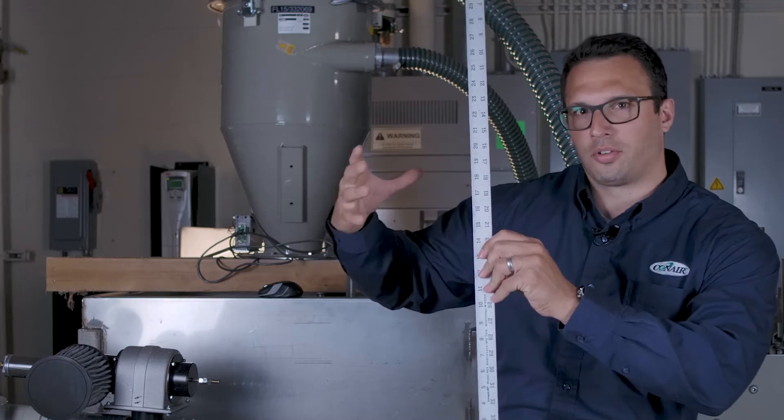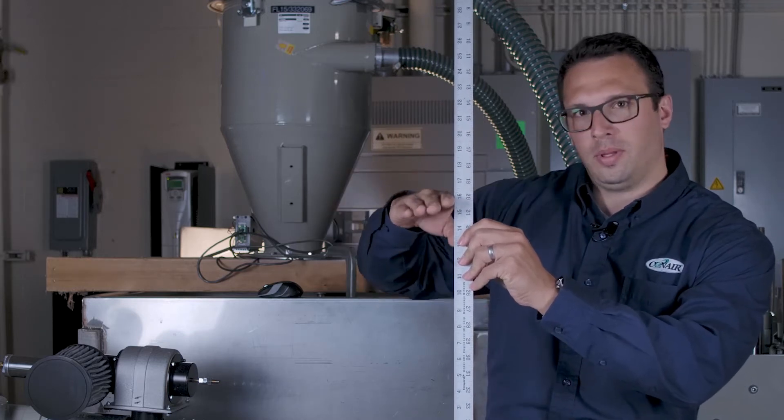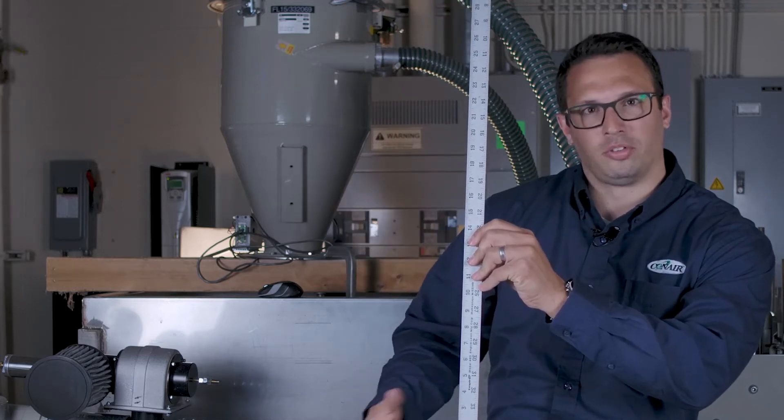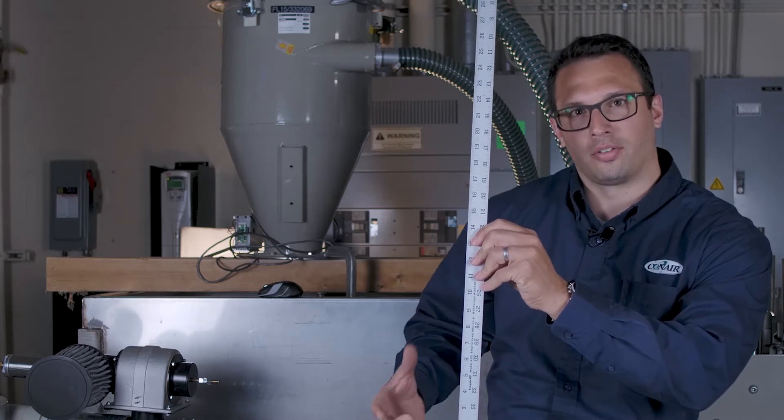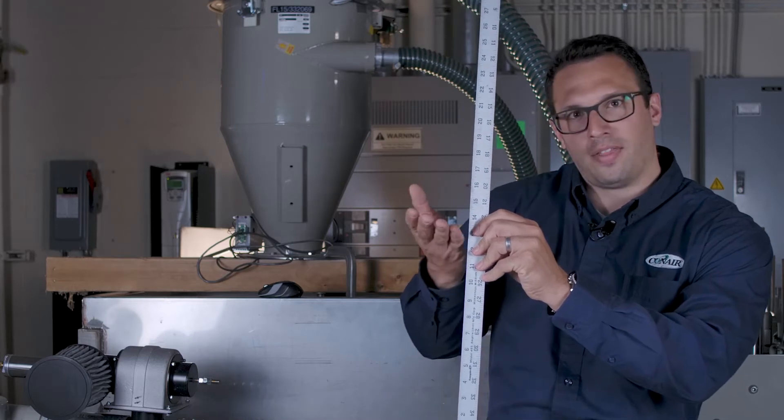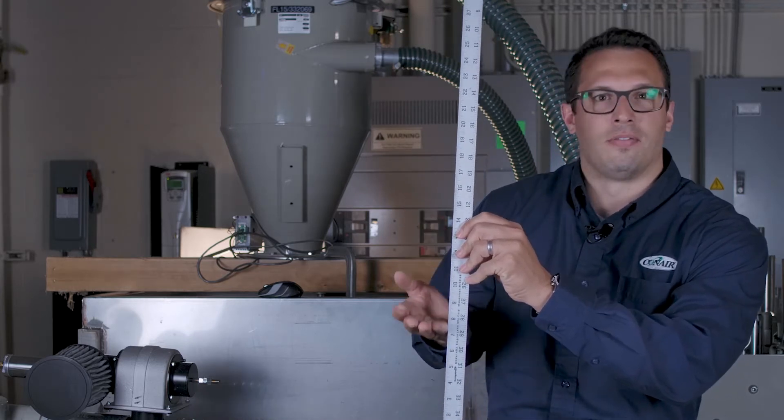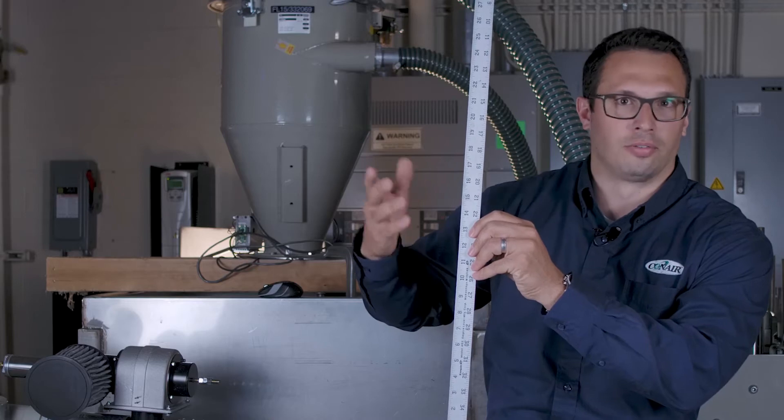How the systems work is we have our receiver vessel. If the resin is being consumed by the injection molding machine or the extruder below, as that screw recovery or continuous screw process is sucking the resin down via gravity, that resin level is going to be falling down this ruler, for example.